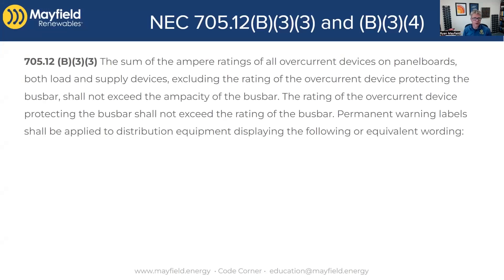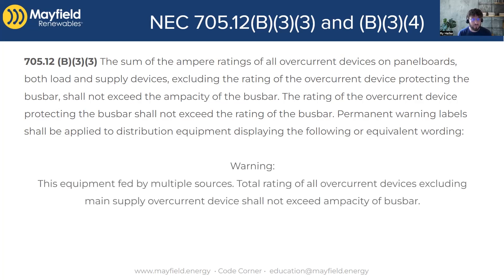First off is B33. So B33 is just another option, one of the calculations you can do to see how to size your panel and if you can put PV on it. This one is the sum of breaker rules, as we call it. Basically, you're looking at the sum of all the overcurrent device ratings on that panel — whether it's a PV breaker or a load breaker — adding them up and making sure they do not exceed the bus rating of the panel. You do exclude the rating of the main overcurrent protection device. We see this a lot on our PV combiner panels. You want to put a warning label on there letting everyone know it's fed by multiple sources and that the total rating of all the breakers doesn't exceed the bus bar. This is a great label to have because it lets the future electrician know when they're coming in to add loads that they need to be aware of that.